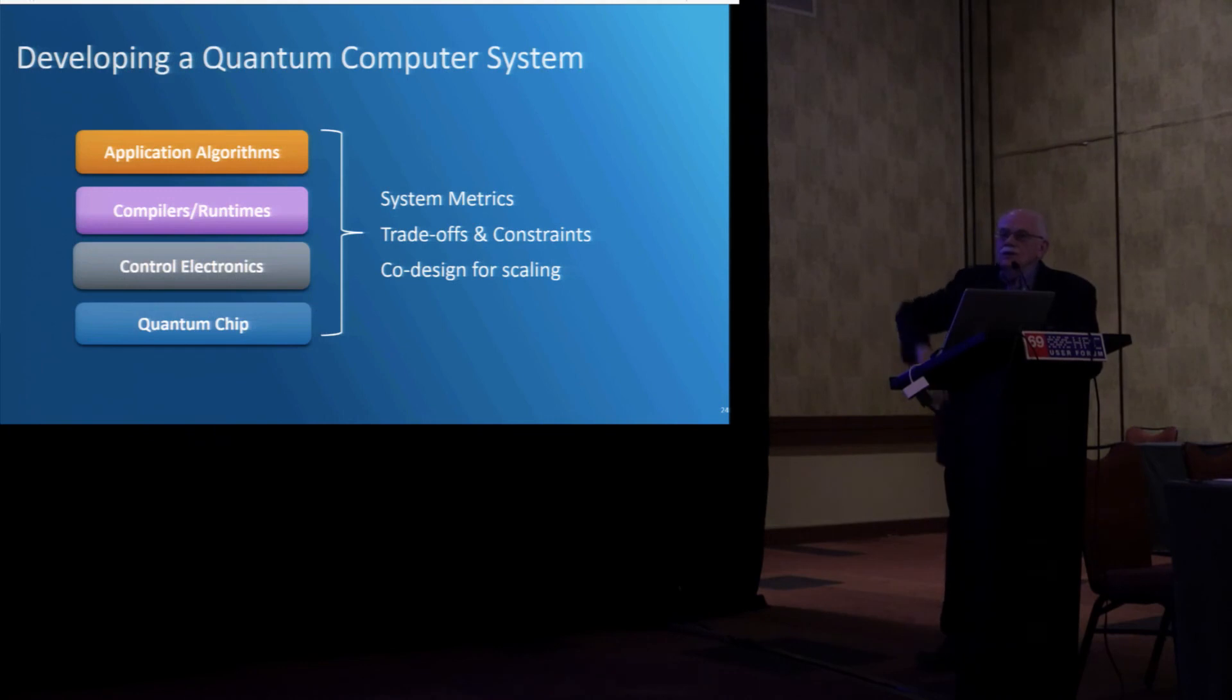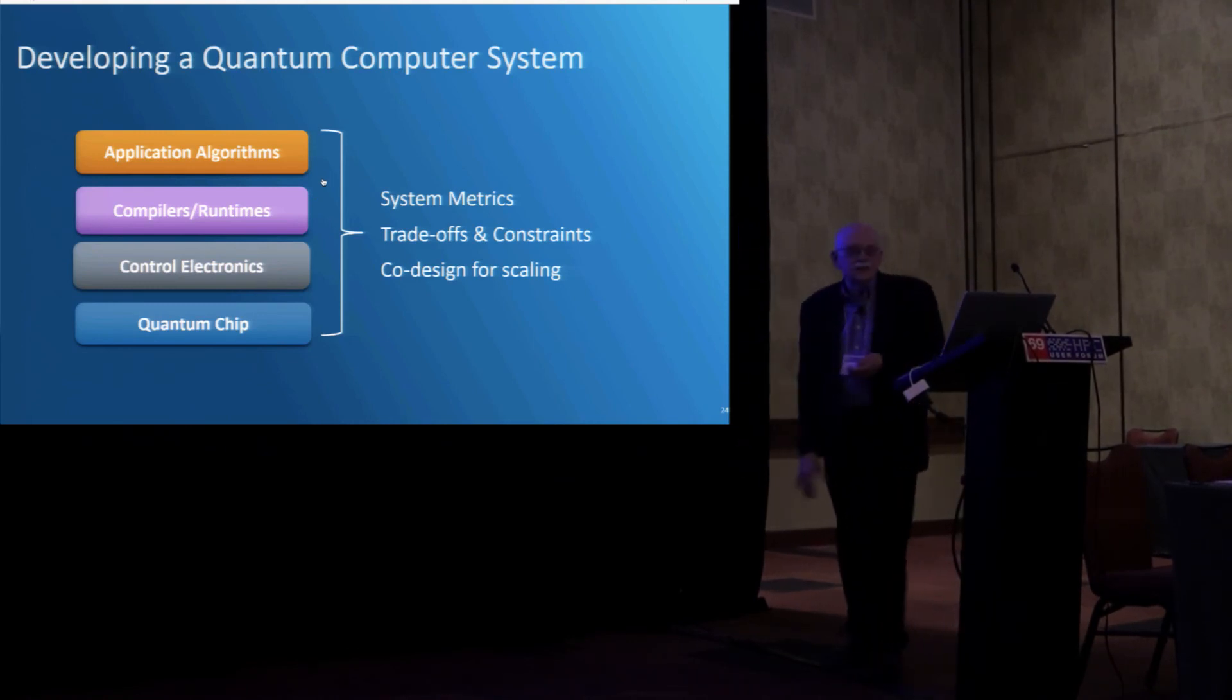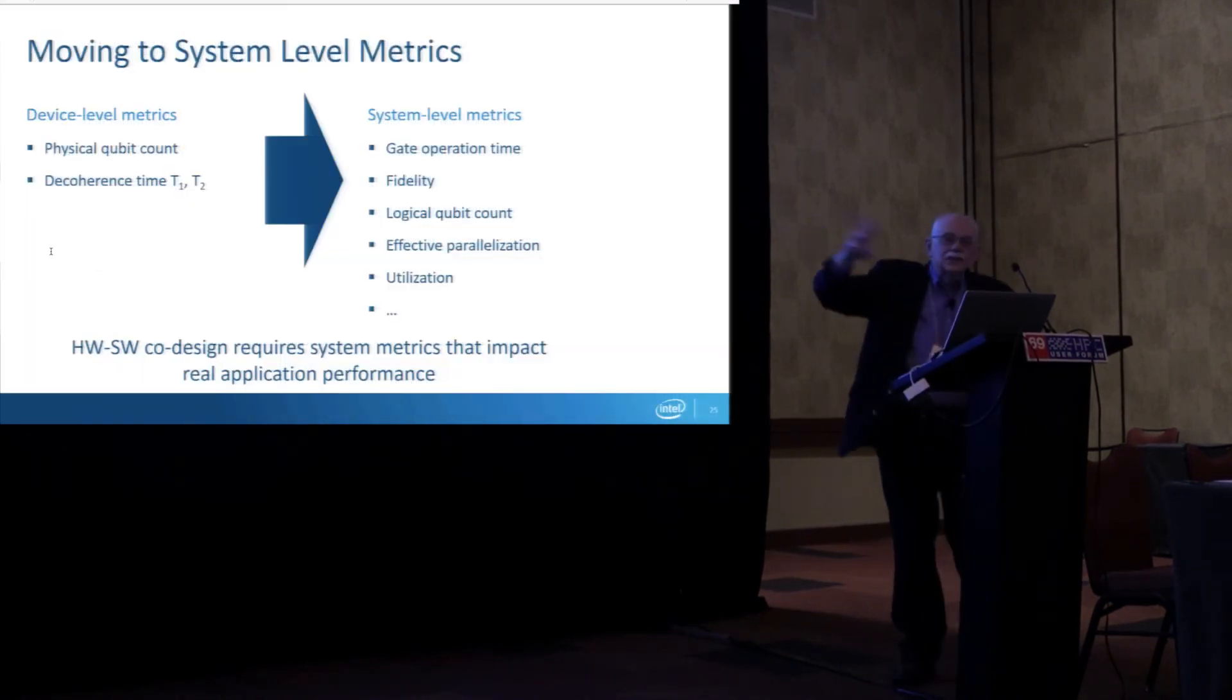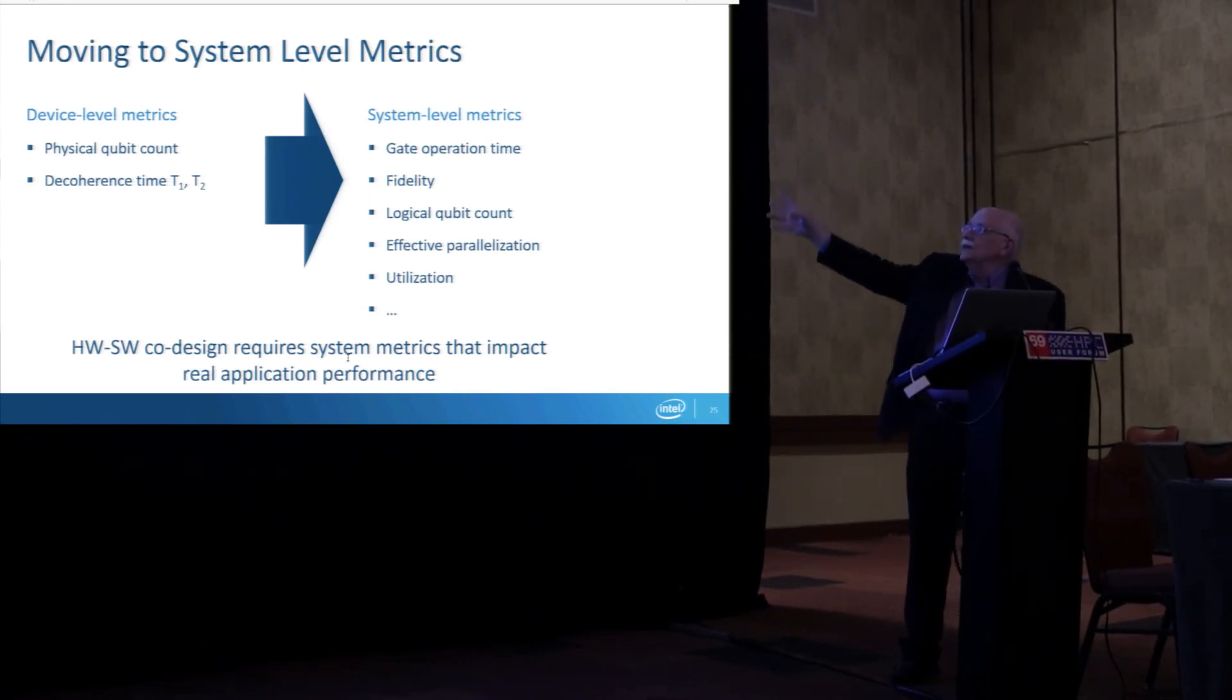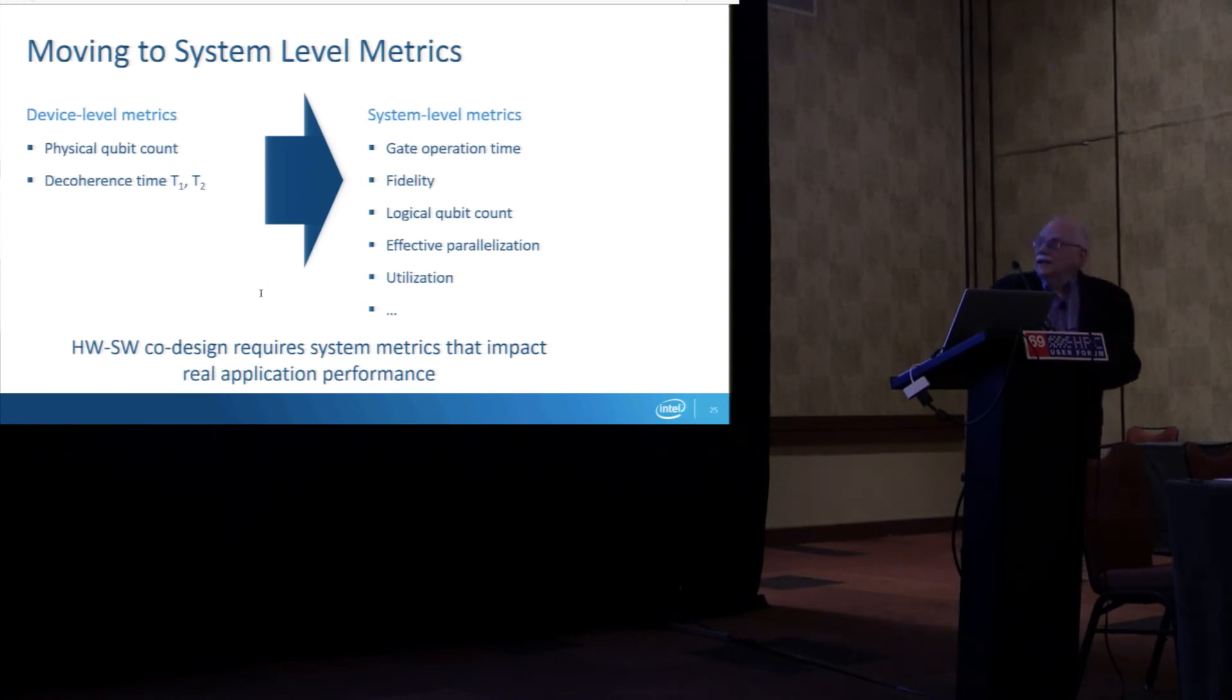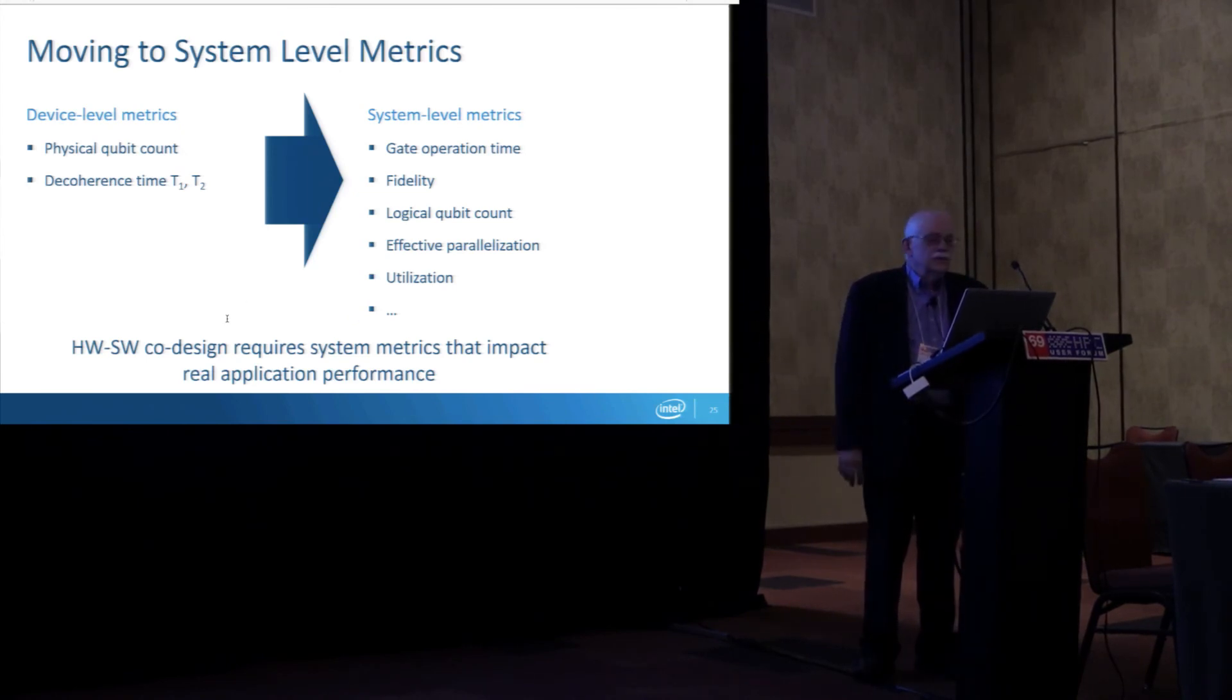As we look at the whole system, we see that we need to move from simple metrics about the devices to things that reflect the behavior of the system in order to guide us with trade-offs and constraints and co-design for scaling. We've been focusing, we still value measurement of the device level metrics, but we're interested and are developing many more metrics. Not seeking a single benchmark or a single metric, which I think is an oversimplification. But what are the metrics that in combination allow us to characterize the system and understand the impact of what we do at each level?